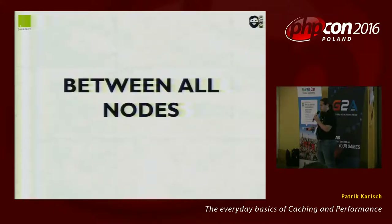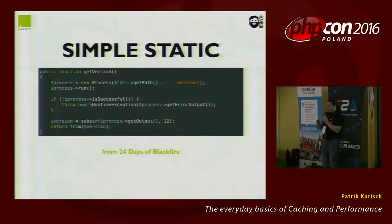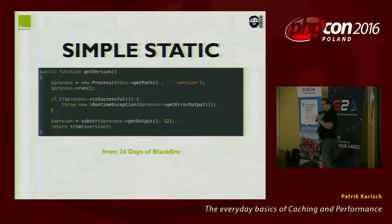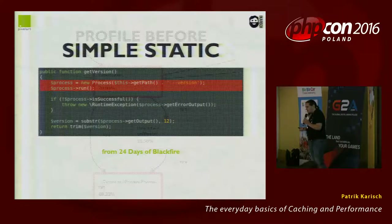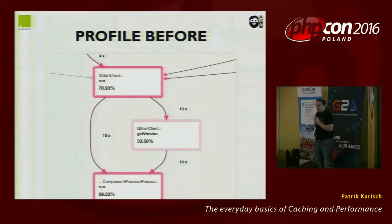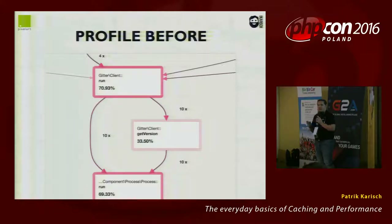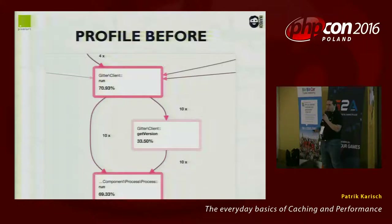Let's take a quick example from 24 Days of Blackfire. Here there's a network getVersion call which uses the Symfony Process component to get the git version. This is a heavy run. If you look at the profile — and always profile your application to know where you have performance suckers — you can see 33.5% of runtime is spent calling getVersion 10 times. We're calling git --version 10 times, and it sucks 30% of our application runtime. Let's improve this.